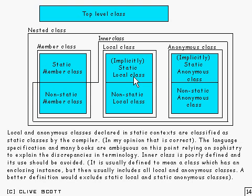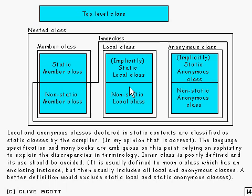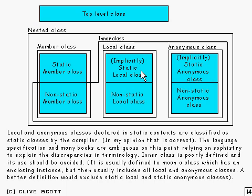In my opinion, the compiler is quite correct there. The language spec and many books get a bit ambiguous on this point, and that causes problems when it comes to the definition of 'inner class.' Inner class is rather poorly defined as a concept, and it's a term I've avoided using. It is usually defined to mean a class which has an enclosing instance. But then they start including these implicitly static classes as well.